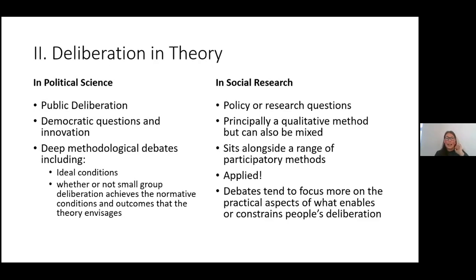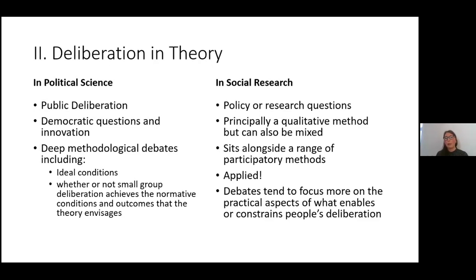There is a distinction in deliberative theory between what is discussed in the context of political science — focused on public deliberation in participation and democratic practices — and those used more in social research, where we take some of those principles but use them in an applied way. In the political science framework there are deep methodological debates about the ideal conditions for deliberation and using those to measure whether small-group deliberation achieves these normative conditions. Whereas in social research, debates tend to focus more on the practical aspects of what enables or constrains people's deliberation.